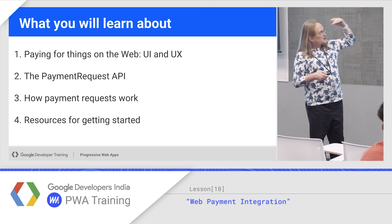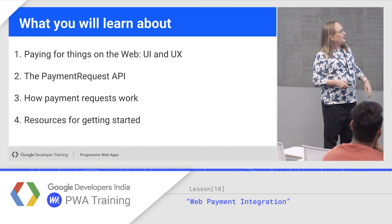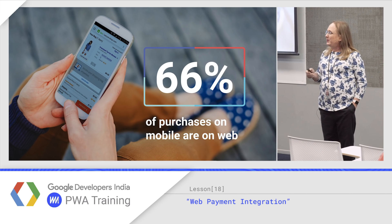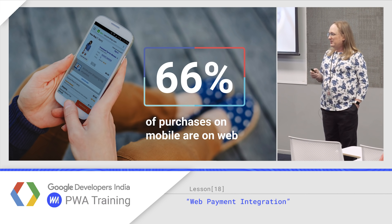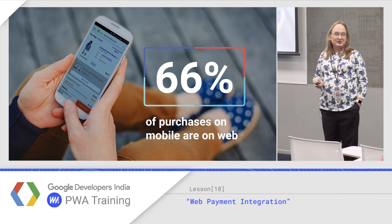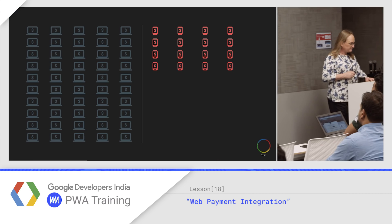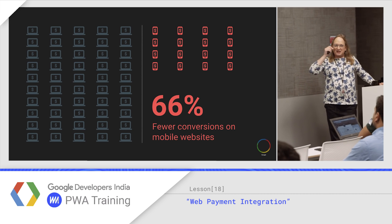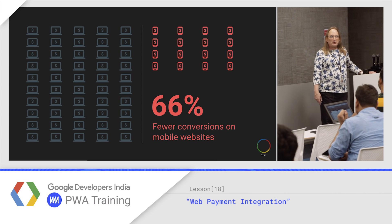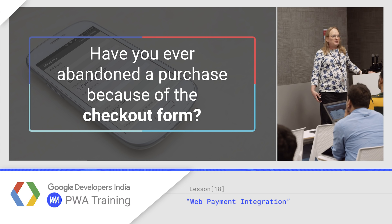We're going to talk about the user experience, the payment request API in JavaScript, how those requests work, and then point you at how to get started. So 66% of purchases on mobile are on web — even when you have a custom application for shopping, people still go to their web browsers. It's another argument in favor of a progressive web app. If you're doing a new e-commerce product, putting it in the app store is probably less productive than building something really good for the web. But there are 66% fewer conversions on mobile websites, meaning people come to the site but fewer people actually buy relative to an app.